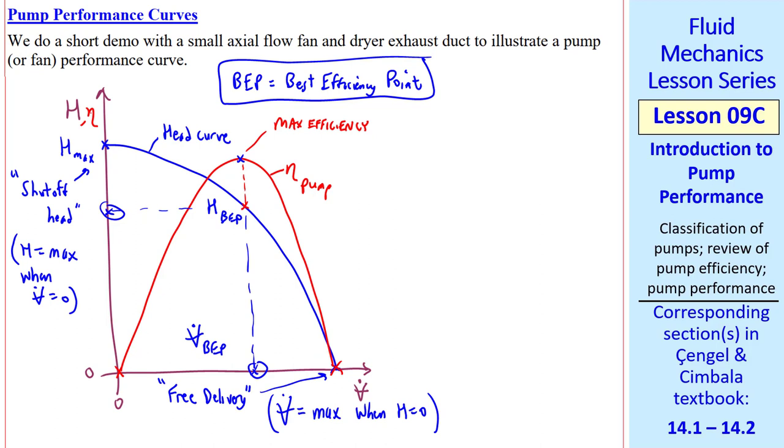These are just qualitative curves, but I'm plotting H and eta on the same plot. They'd of course have very different units. Eta is dimensionless, while H has dimensions of head or length. We can also plot the brake horsepower, or if it's a pump motor combination, W dot electric, which is non-zero even when there's no flow, and generally just moves up slowly like this.